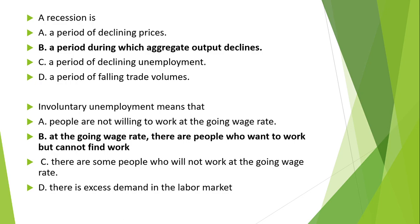Recession is another important concept. The business cycle has four phases: boom, recession, depression, and recovery. The MCQ options include: a period of declining prices, a period during which aggregate output declines, a period of declining unemployment, and a period of falling trade volumes. Recession is the phase where the overall output of the economy declines and the economy moves downward. Option B — a period during which aggregate output declines — is the correct option.